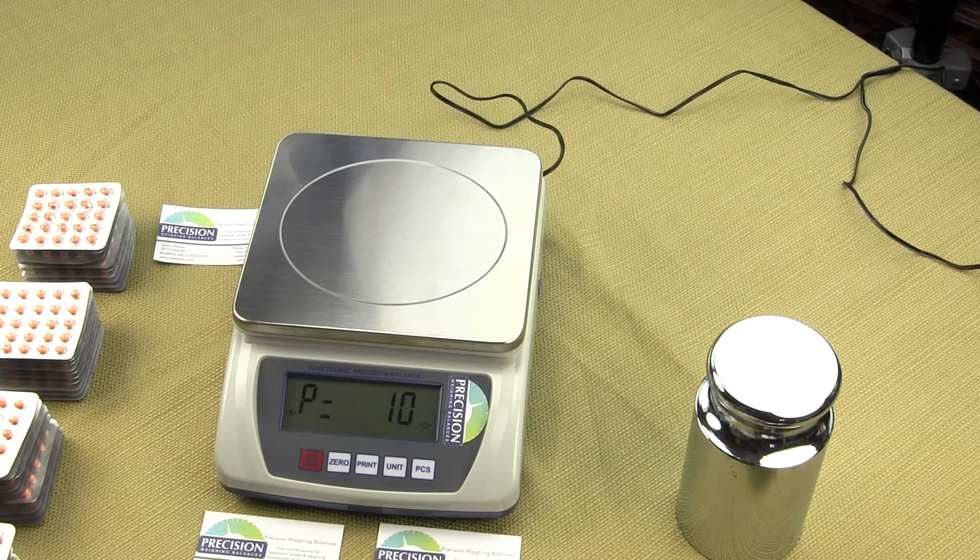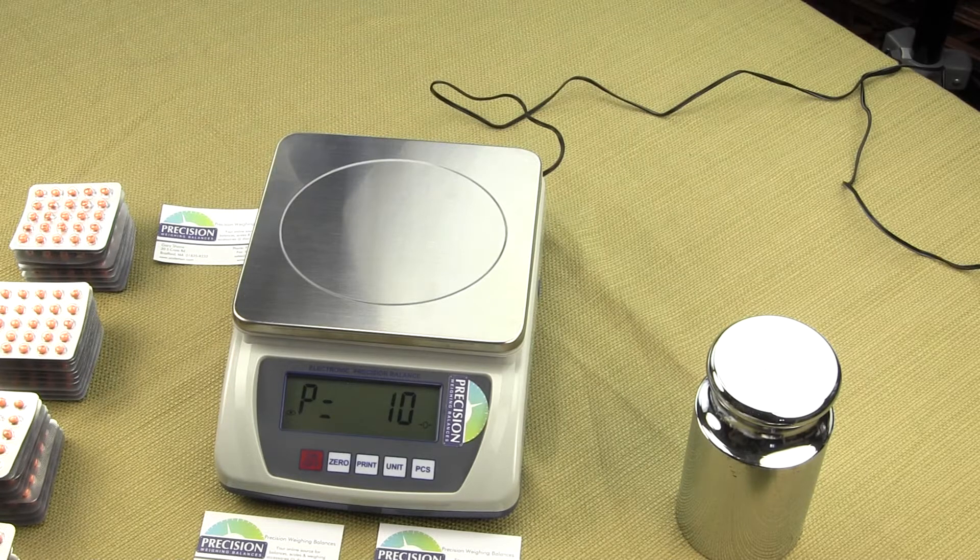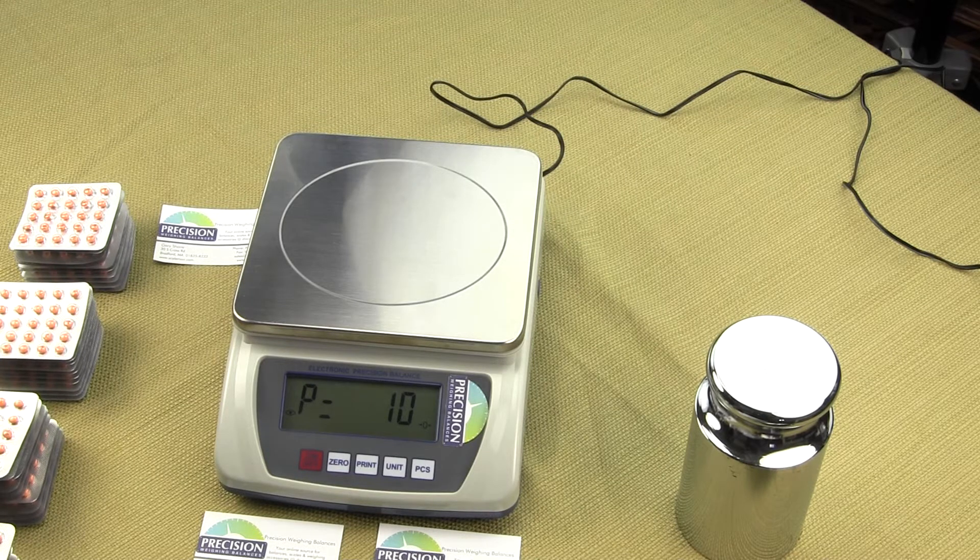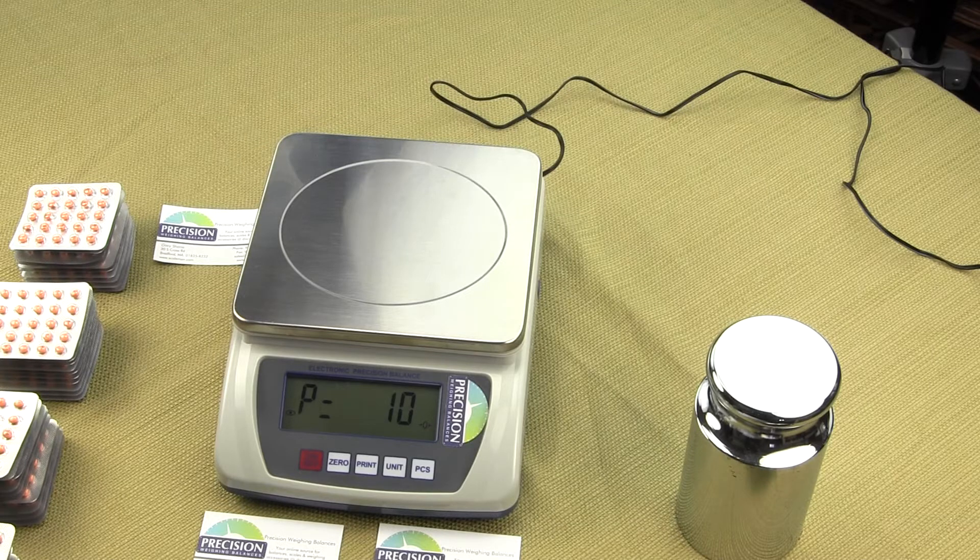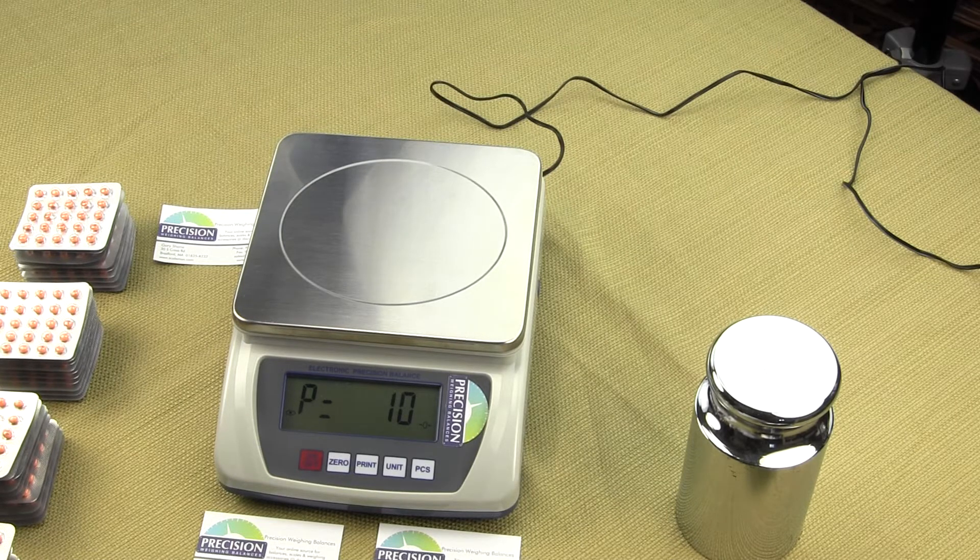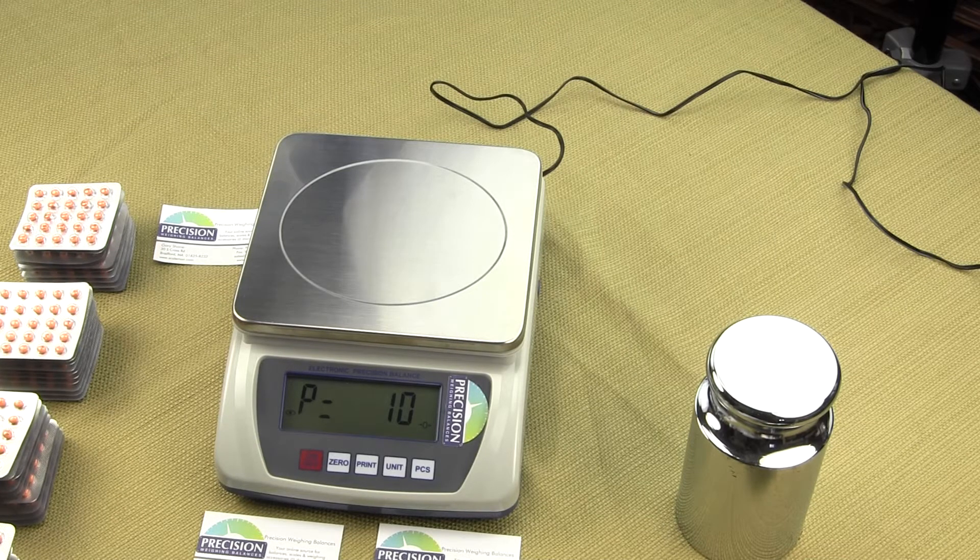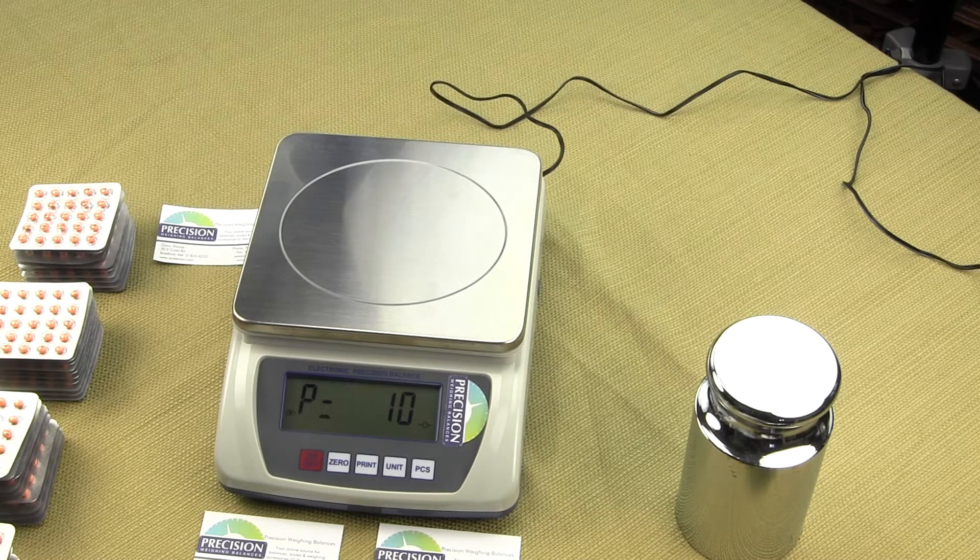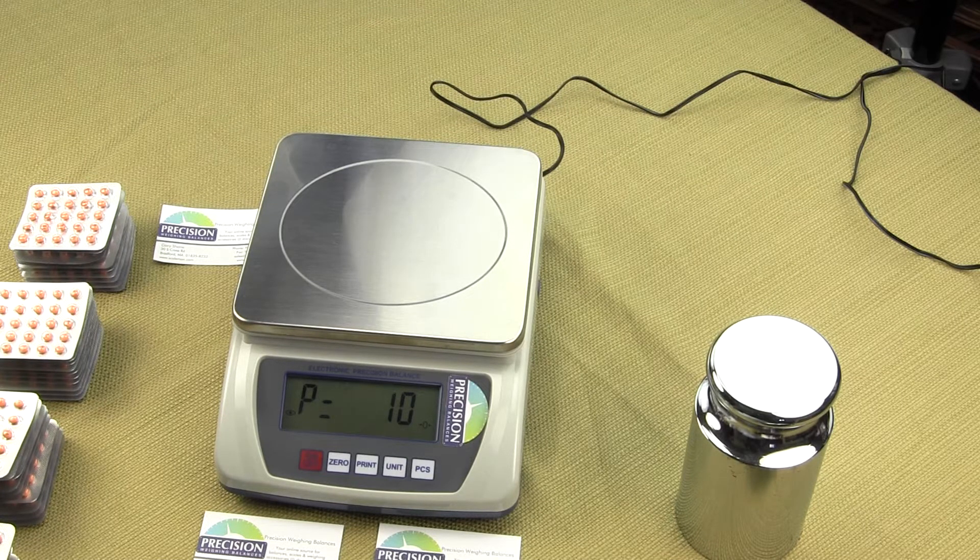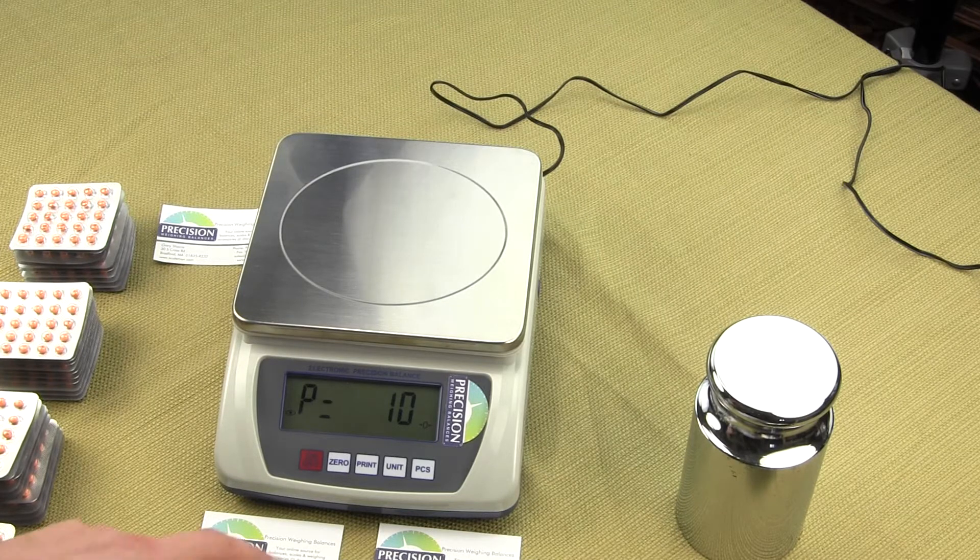This means to place 10 pieces of parts on the scale to determine the average piece weight. We don't want to use a sample count of 10 pieces since a larger sample size will give us better counting accuracy due to variation in the weight of each part. Parts can weigh differently because of dirt, oil, other contaminants, metal burrs, moisture, or the part might be manufactured with a very broad tolerance. The larger the sample size, the better representative you will get for an average piece weight.